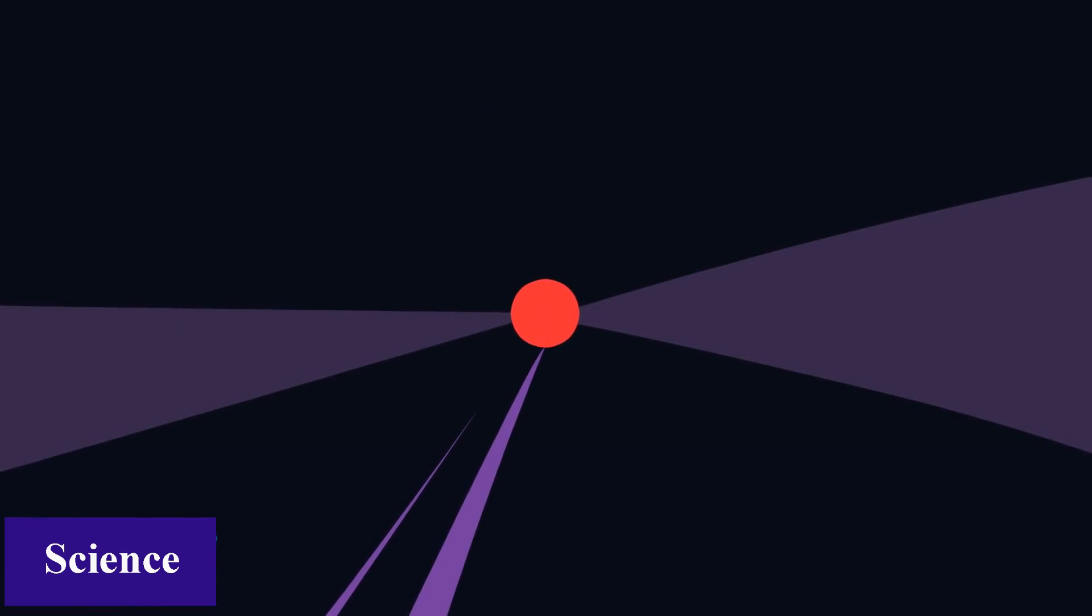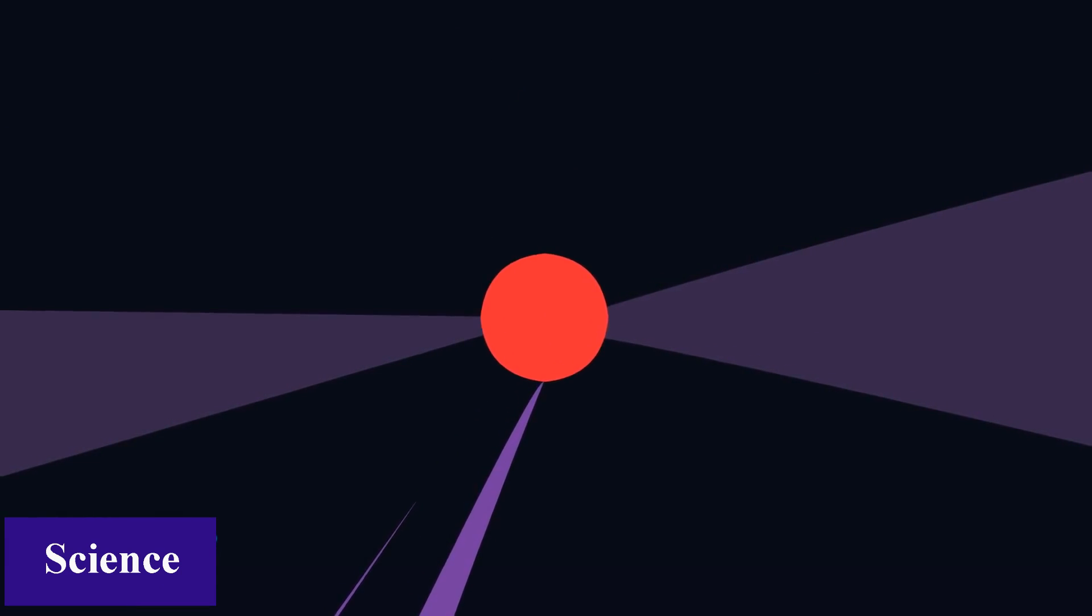Some black holes trap more and more material as their mass increases. The point where all that mass is trapped is called a singularity. It may be infinitely small, but its influence is enormous.